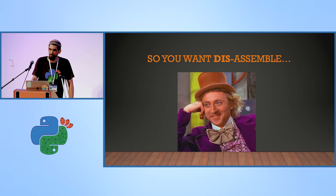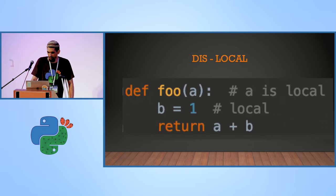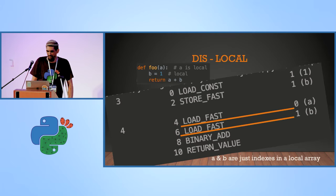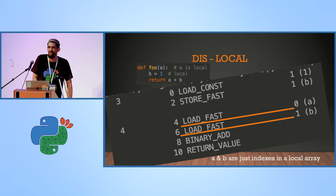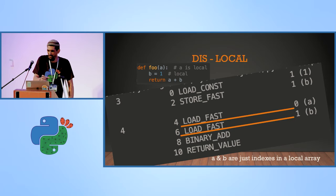Let's disassemble the previous examples and see if we can understand a bit more in detail. We're returning to the local scope. This is the function from before — with dis, we see that to load A and B we have the bytecode instruction load_fast. Load_fast means: go to the local array and take it by index. A is actually zero, B is one — the index is known at compile time — and then you can manipulate it.